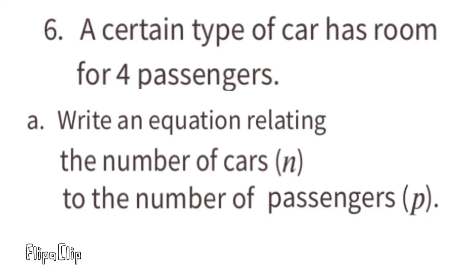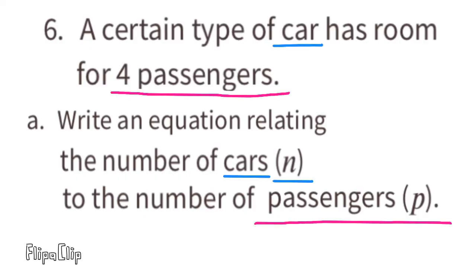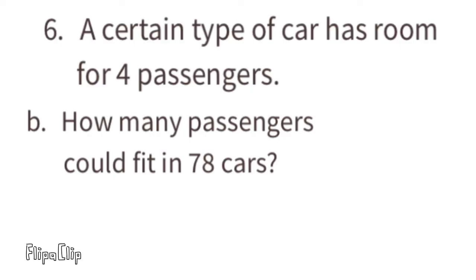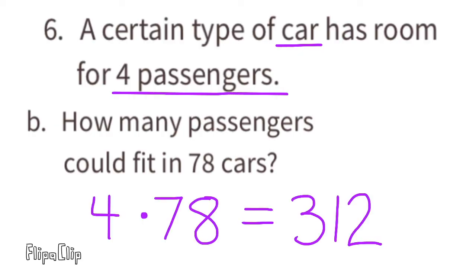Problem number six: a certain type of car has room for four passengers. Part A: write an equation relating the number of cars N to the number of passengers P. For every one car there are four passengers, so the equation is N equals 4P. Part B: how many passengers could fit in 78 cars? Four times 78 equals 312 passengers.